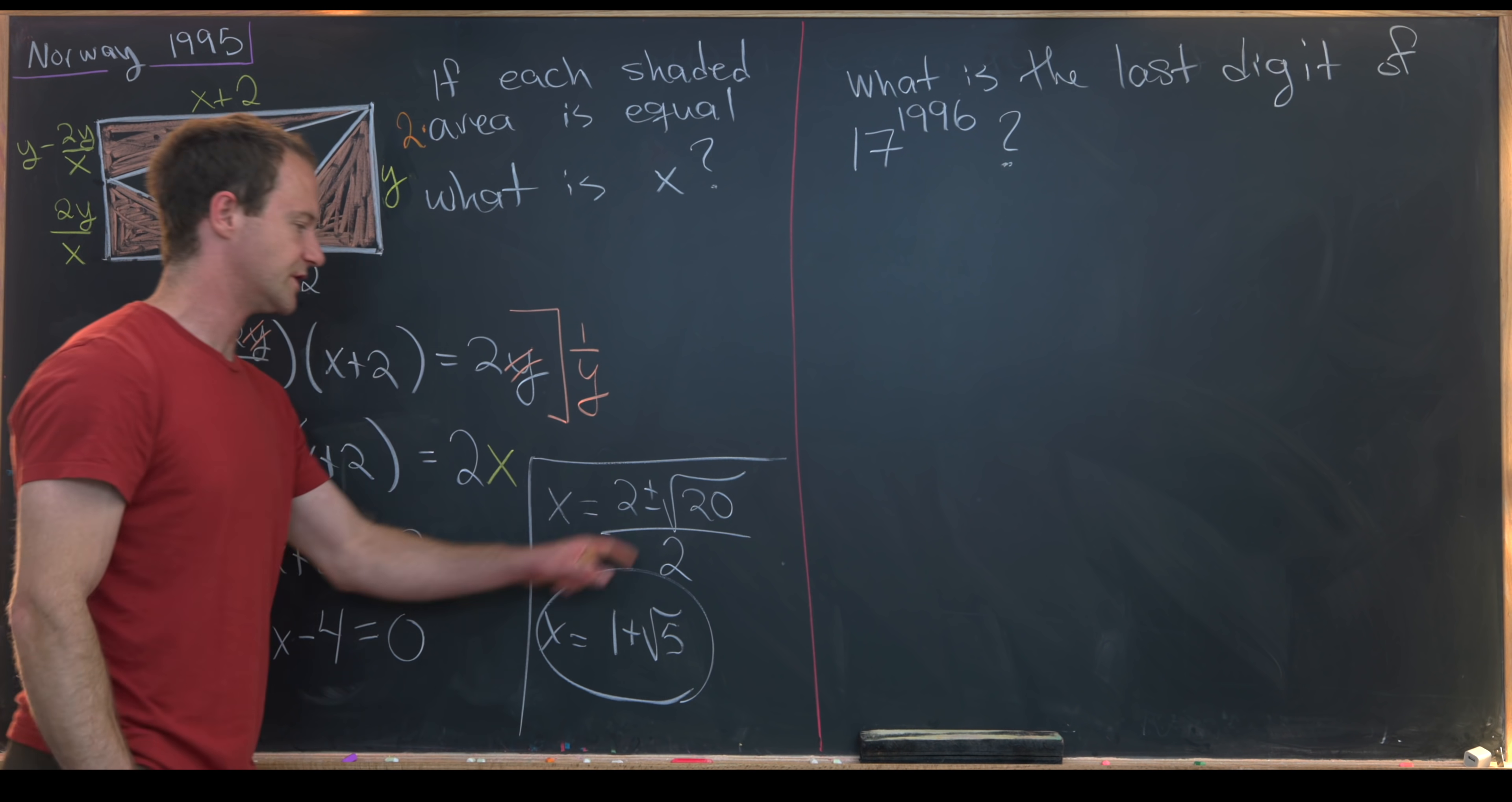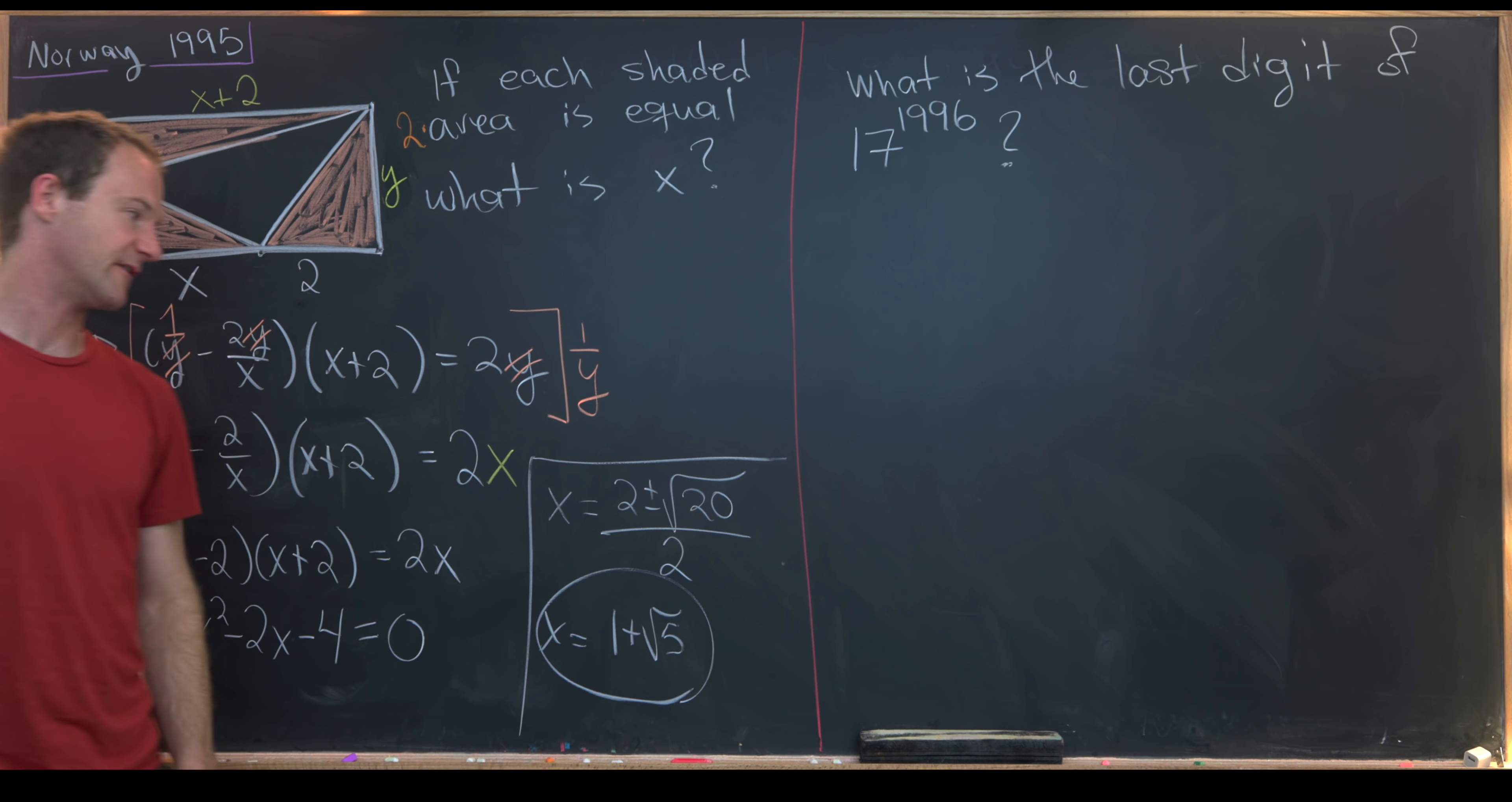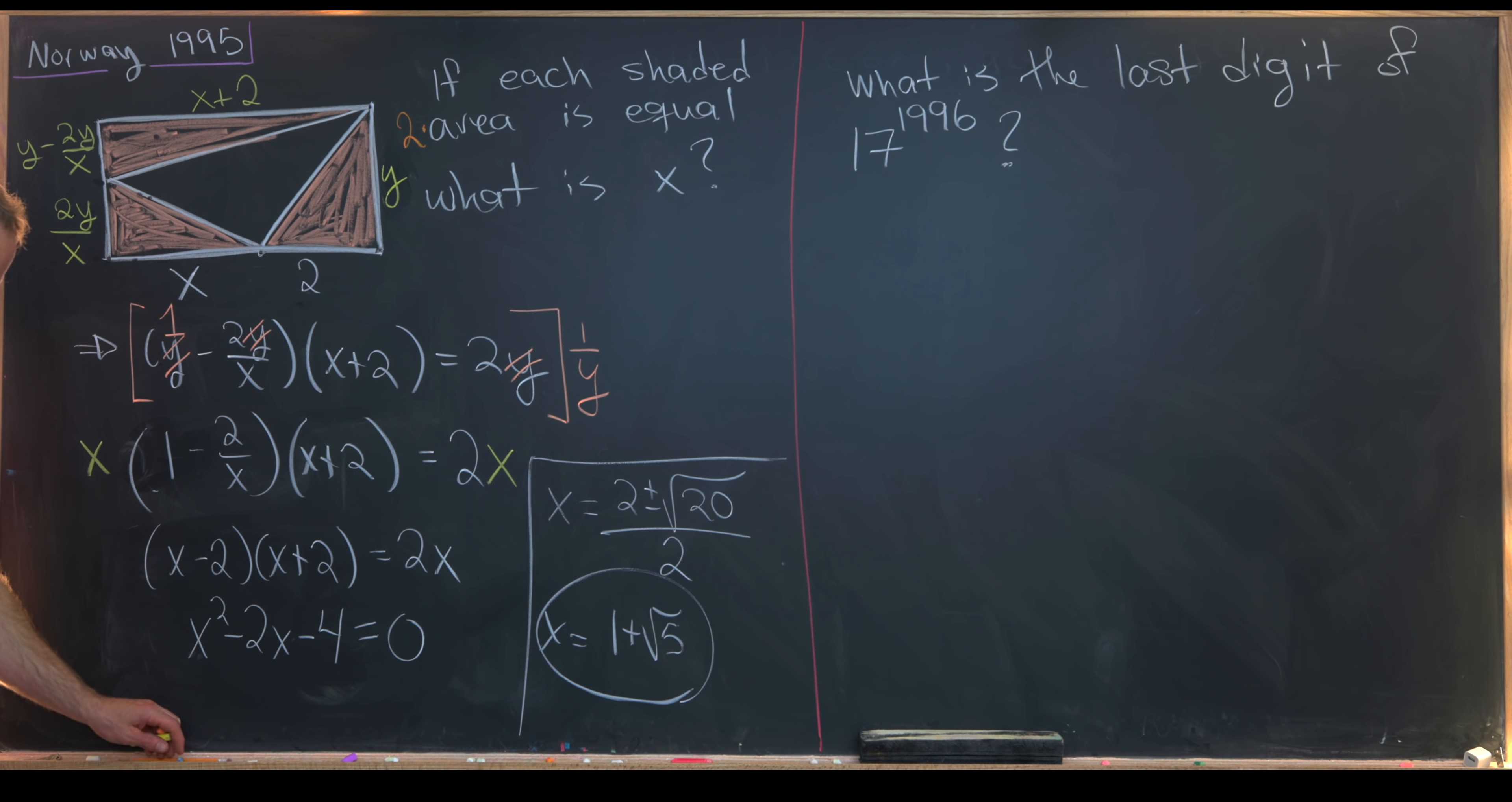Then doing some simplification, we see that our x value must be 1 plus root 5. We don't need the minus sign because that would correspond to having a negative line segment length here. And we can also factor a 4 and take the square root out of this square root, leaving us with 1 plus root 5.